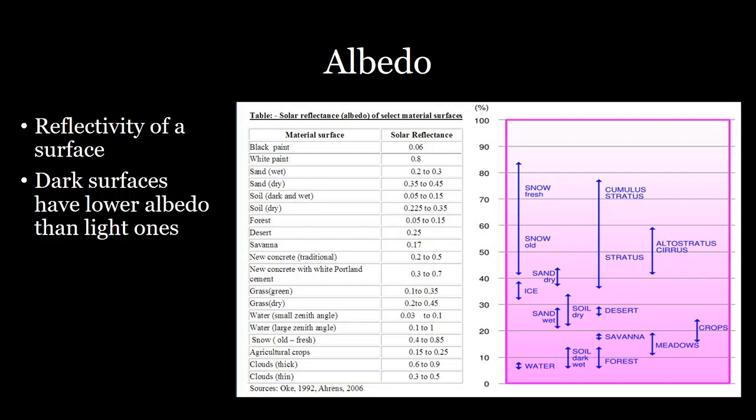And so a number of different surfaces have different albedos. Some of the highest albedos or most reflective surfaces are snow and clouds, which are very bright white. And so fresh snow can reflect up to 80% of the sunlight that hits it, usually around 60% as it gets older and darker. And clouds can reflect a good amount of light as well.